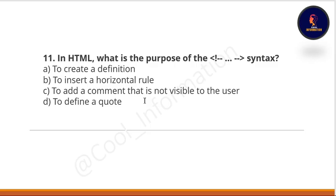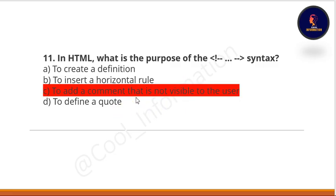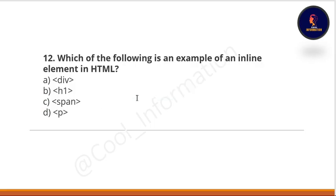Next question: in HTML, what is the purpose of the comment syntax? Option A: to create a definition. Option B: to insert a horizontal line. Option C: to add a comment that is not visible to the user. Option D: to define a quotation. The correct option is C — to add a comment that is not visible to the user.